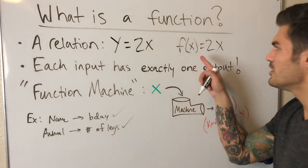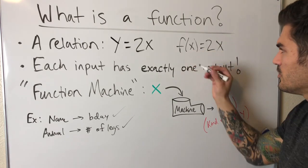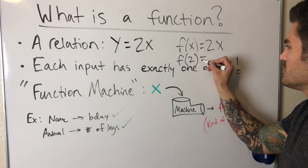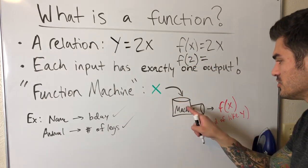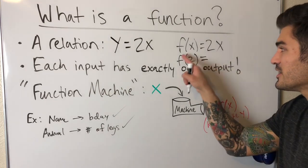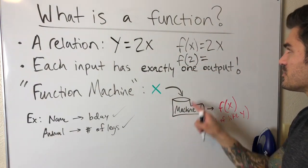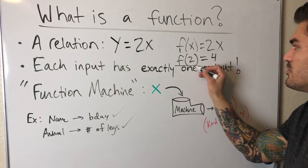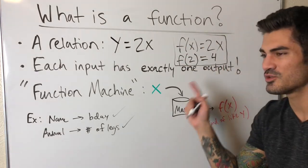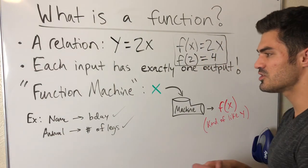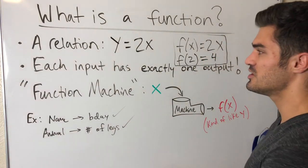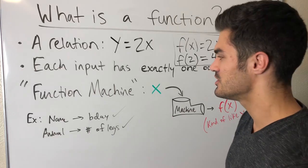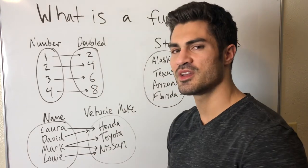We replace y with f(x) to show that it is indeed a function. To evaluate this, we can write f(2), meaning we're putting 2 into the function machine. It doubles whatever we put in, so we get out 4. This is how to evaluate a function: each input has exactly one output. If an input has two or more outputs, it is not a function — just a relation.